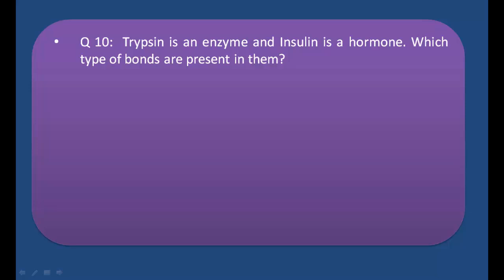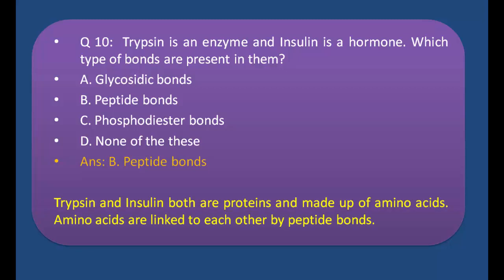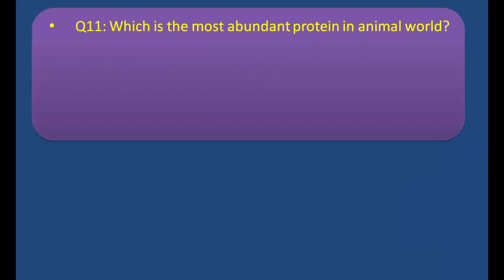Q10: Trypsin is an enzyme and insulin is a hormone. Which type of bonds are present in them? a) Glycosidic bonds, b) Peptide bonds, c) Phosphodiester bonds, d) None of these. Answer: b) Peptide bonds. Trypsin and insulin both are proteins and made up of amino acids. Amino acids are linked to each other by peptide bonds. Therefore trypsin and insulin both are proteins in which amino acids are joined by peptide bonds, so the answer is b) peptide bonds.